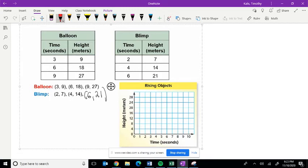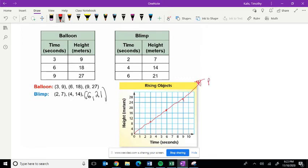We're going to go over 3, up 9. And then over 6 and up 18. And then over 9 and up 27. And we're going to graph that. And again, that is the balloon.